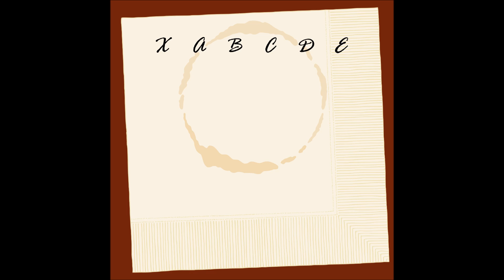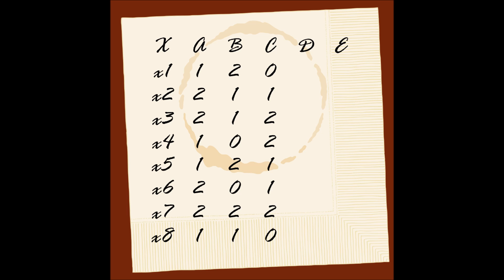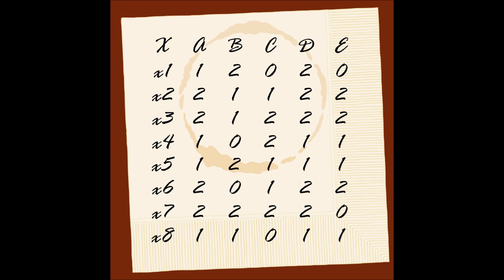This system contains eight tuples labeled X, four condition attributes labeled A, B, C, and D, and one decision feature labeled E. Condition attribute A has two possible values, 1 and 2. Attribute B has values 0, 1, 2. Attribute C has values 0, 1, 2. The last condition attribute D has two possible values, 1 and 2. Our decision feature E has three possible values, 0, 1, 2.